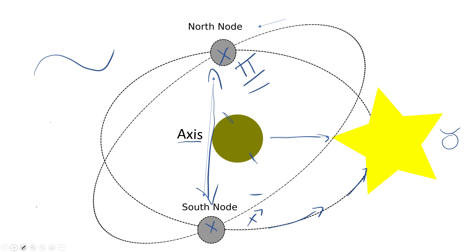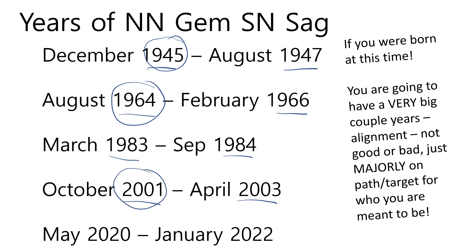If you were born between December 1945 and 1947, 1964 through 1966, 1983 to 1984, or 2001 to 2003, you have North Node in Gemini. This year is one in which you will make great progress and push forward at a faster pace than ever before. If you have things going on that are a detriment to your well-being and trajectory, those things will leave your life very quickly. You can see how these dates coincide with huge world events that happened right before the North Node went into Gemini.